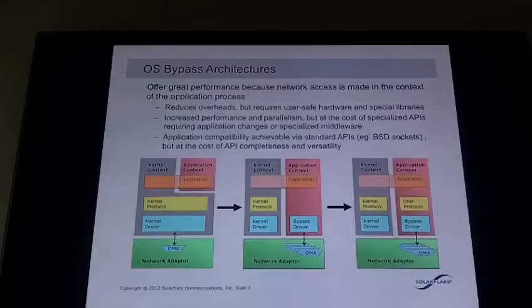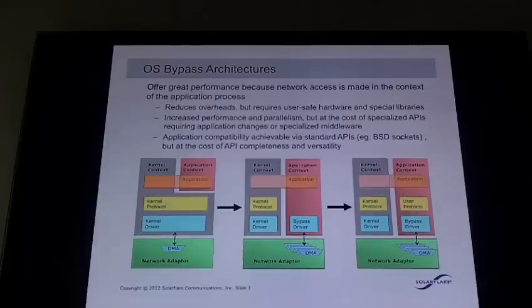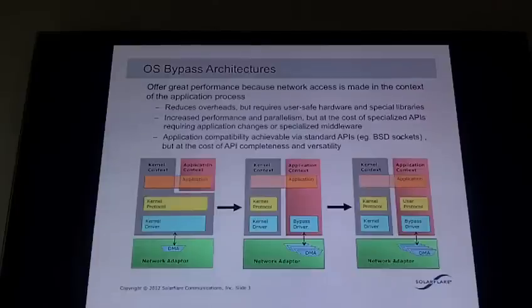Or, you can run over the top of a set of middleware — whether it's MPI or 29 West if you're in the financial services space, or whatever. But not everybody wants to recode their applications to use that middleware, and not everybody uses the same middleware. The third option is to layer over the top of that bypass driver a user-level protocol for doing TCP, UDP, and so on. But the problem here is that implementing that entire protocol is hard, and now you're faced with an all-or-nothing choice for any given operation or flow.